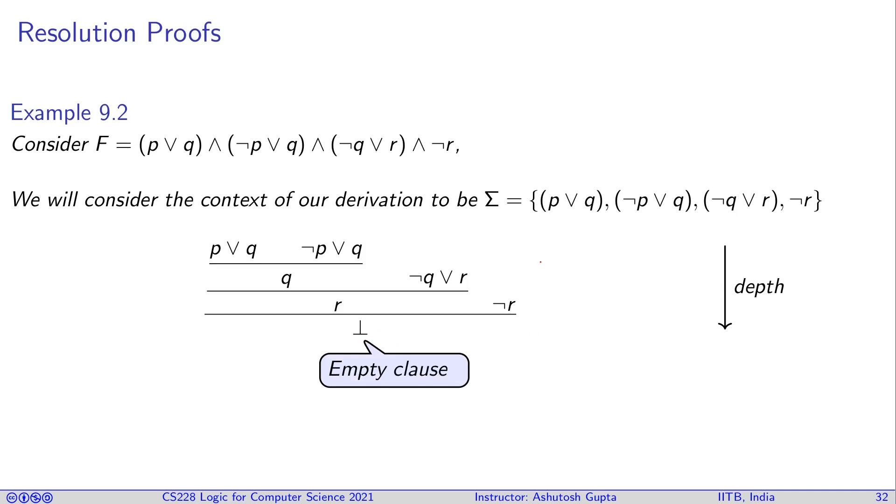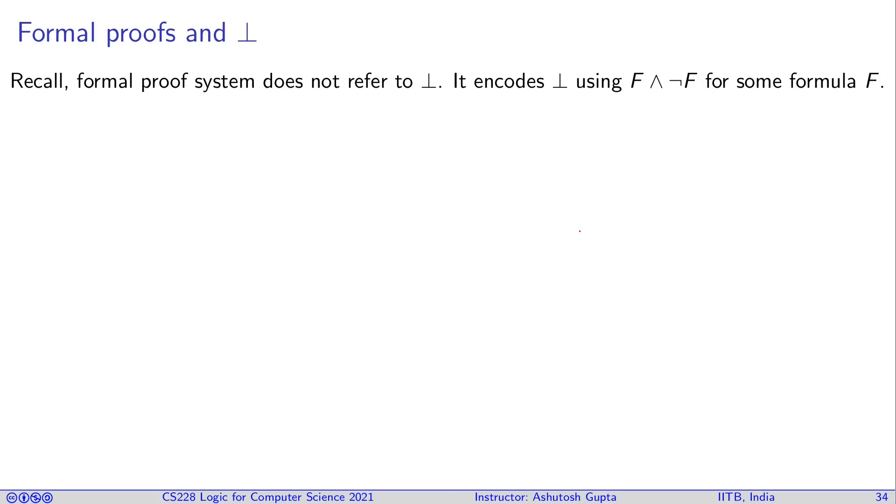This derivation is called the depth of the resolution proof. As we noted earlier, we never derive false in our proof system earlier and we used to derive formulas from sigma, and there was no false symbols in our proof system.